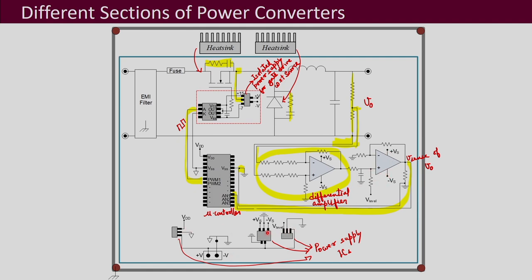All three power supply ICs require their own input voltage, V-plus and V-minus, which is common to all three. This V-plus and V-minus is also the input to the isolated power supply IC used for the optocoupler-based gate driver. All these things can be inside one single PCB. This is a very simple circuit, so everything can be inside one printed circuit board.